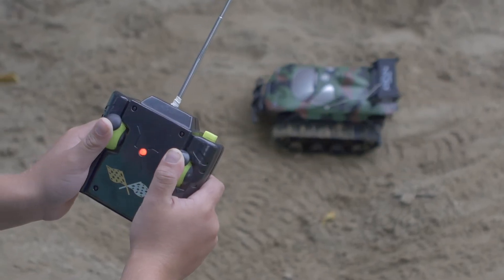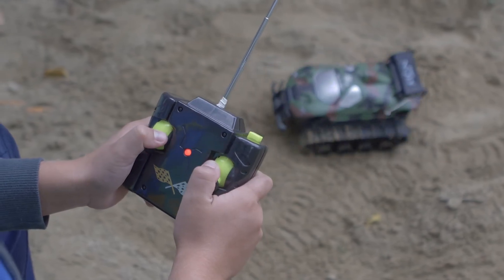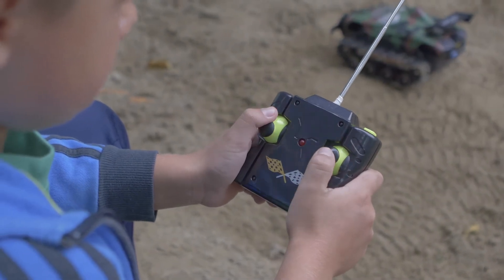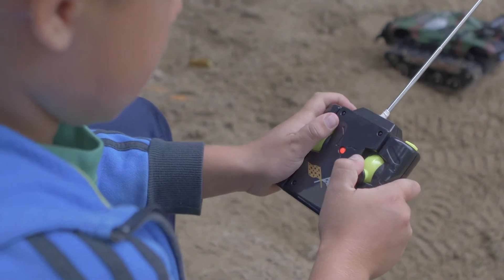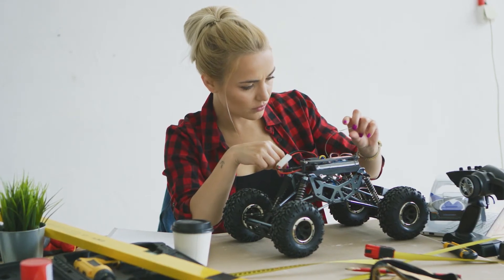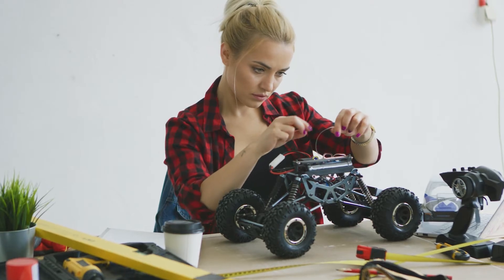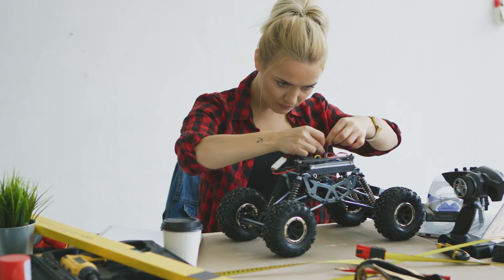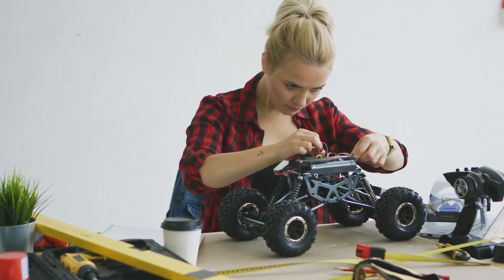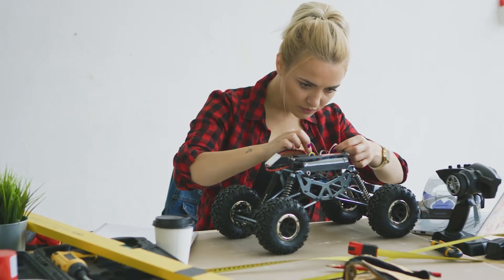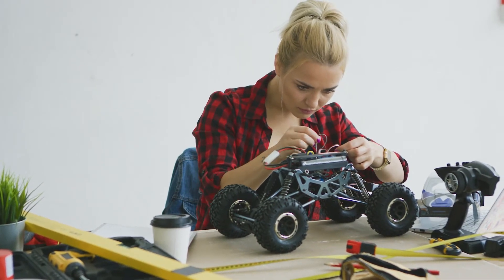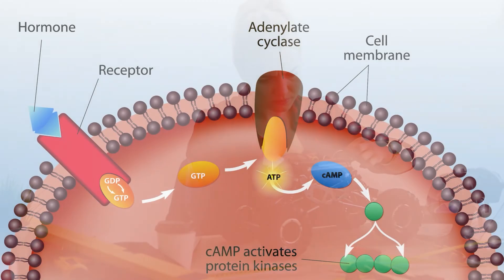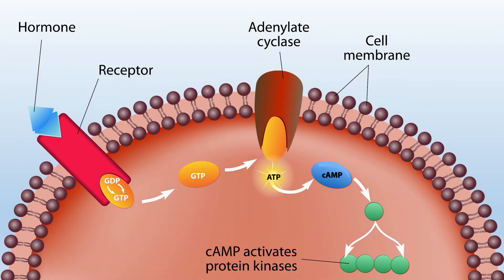Believe it or not, cells have a lot in common with remote-controlled toys. This toy has an antenna to receive incoming signals from the controller; cells have proteins that sit on the cell surface and receive signals. The toy car has an electrical circuit that is activated by the signal; cells use a complex pathway of secondary messengers inside the cell to pass the message along. After the signal has passed through the circuitry it is converted into movement, allowing the car to go forward or backward depending on the original signal. Likewise, cells have a specific cellular response to specific signals that allow them to create an appropriate response in different environments.